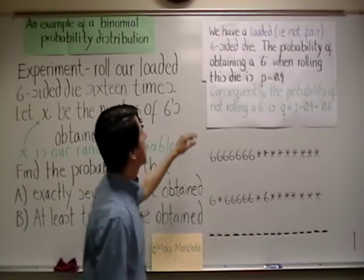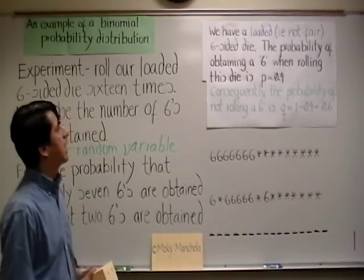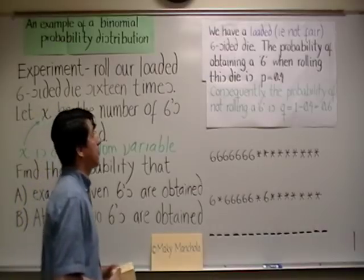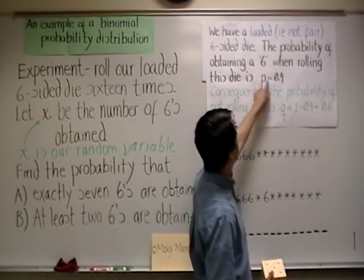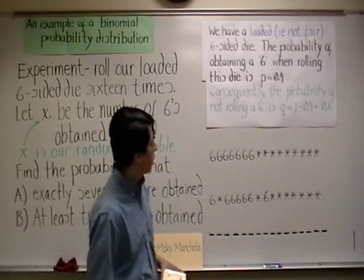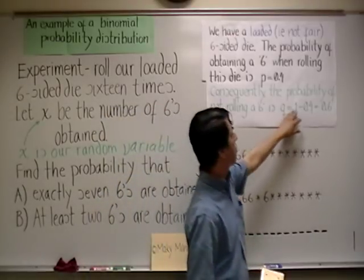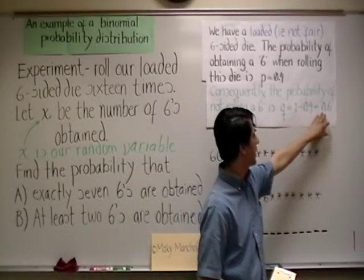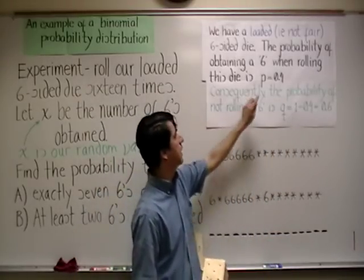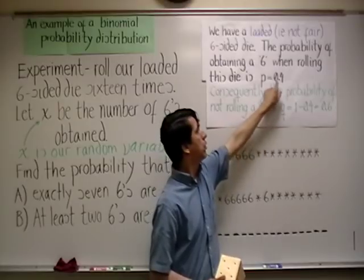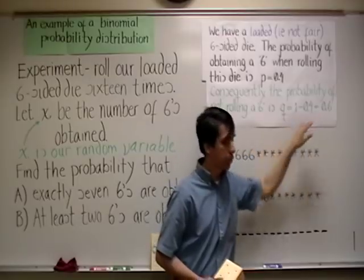Here is the context of our example. We have a loaded six-sided die. The probability of obtaining a six when rolling this die is p equals 0.4. Consequently, the probability of not rolling a six is going to be one minus 0.4 or 0.6. We are calling that q. So, the probability of rolling a six, we are calling p equals 0.4. The probability of not rolling a six, we are calling q which is 0.6.